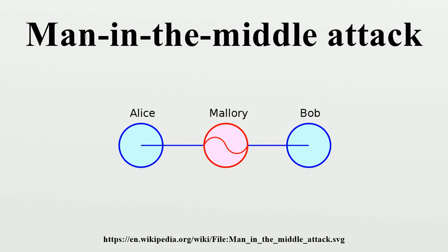Man-in-the-middle attacks can be thought about through a chess analogy. Mallory, who barely knows how to play chess, claims she can play two grandmasters simultaneously and either win one game or draw both. She waits for the first grandmaster to make a move and then makes this same move against the second grandmaster. When the second grandmaster responds, Mallory makes the same play against the first. She plays the entire game this way and cannot lose using this strategy unless she runs into difficulty with time because of the slight delay between relaying moves.